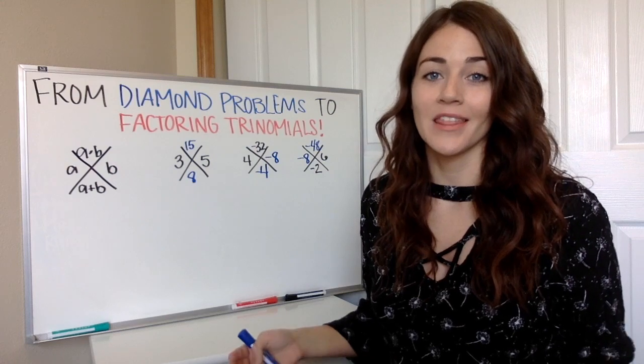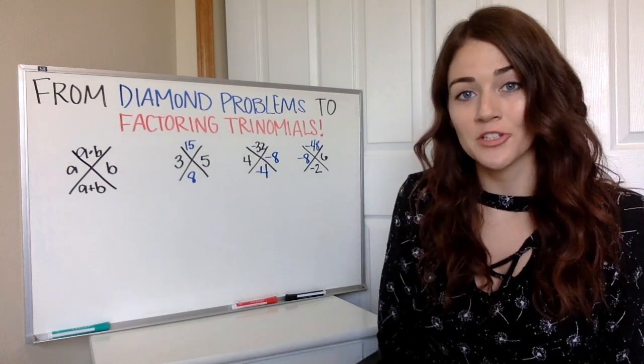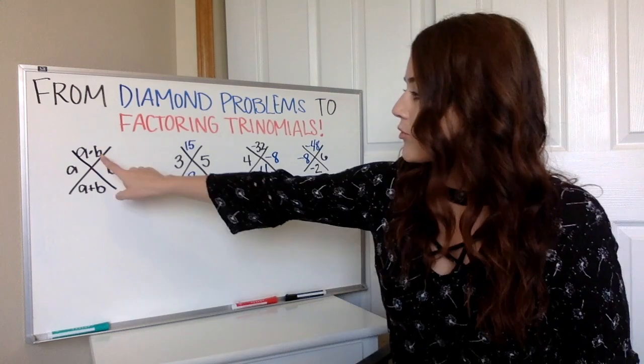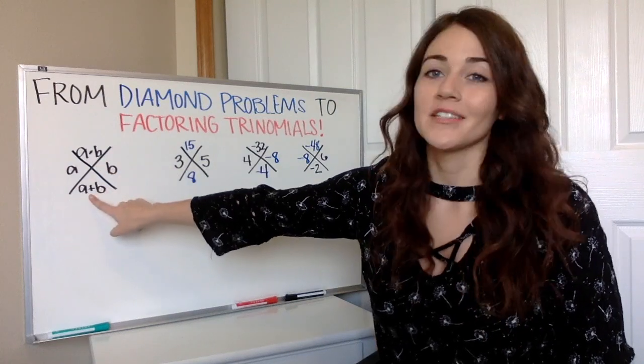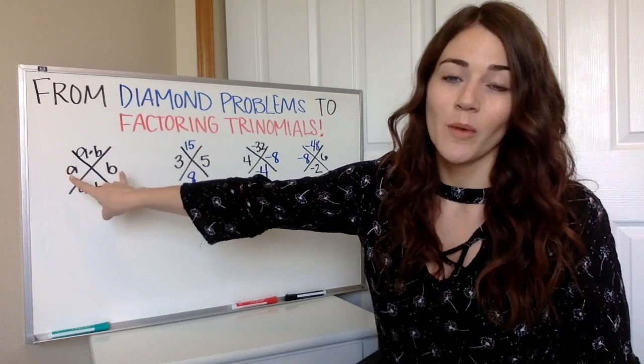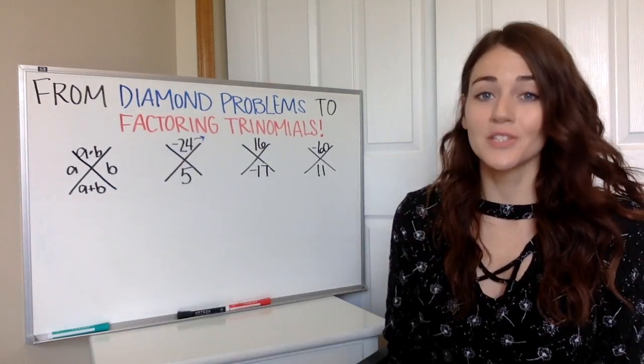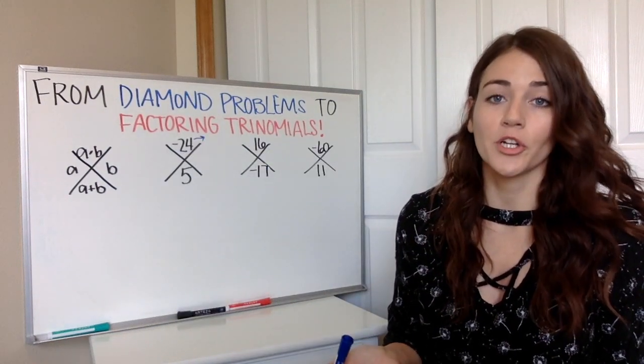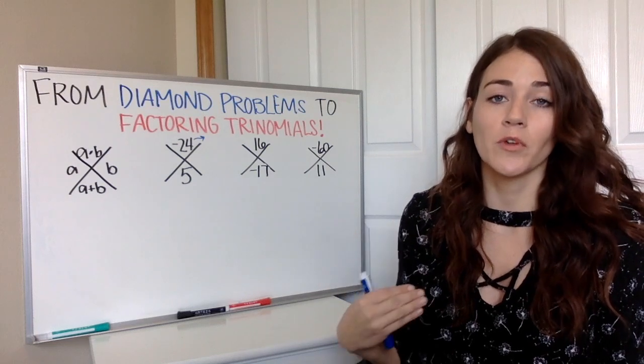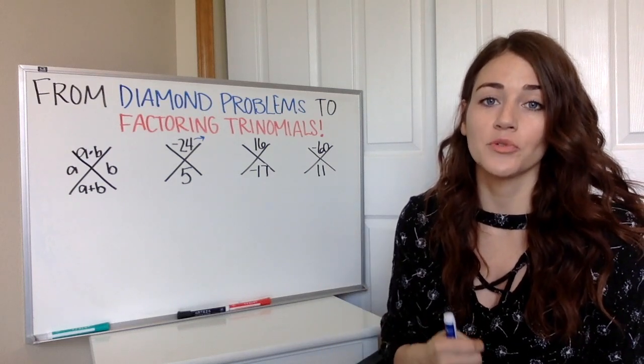Once you've practiced a few like that, they're going to go to the more challenging ones where they give you the multiplication and the addition and you have to come up with what two numbers fit that criteria. So these next three are like I just said, where you're given what they multiply to be and what they add to be and you have to find the two numbers.